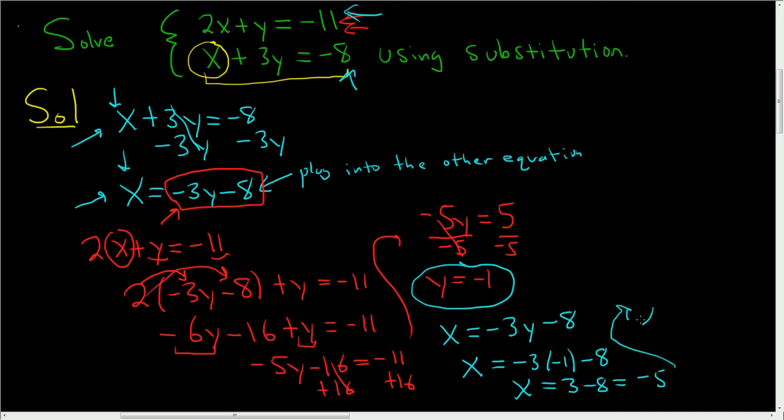So x is negative 5. And that's it, we're done. A better way to write the answer is to write it as an ordered pair. So the final answer would be in the form x comma y, so it would be negative 5 comma negative 1. And that's it.